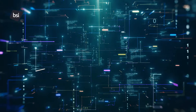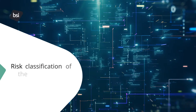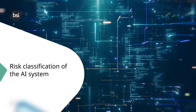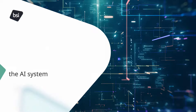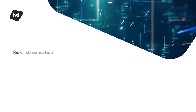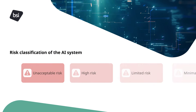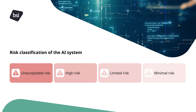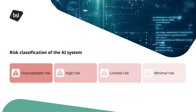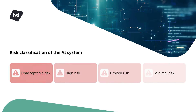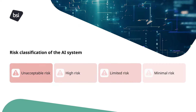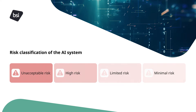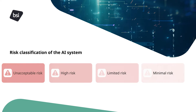The third step is to understand the risk classification system. The AI Act categorizes AI systems into several risk categories based on their potential impact on health, safety, and fundamental rights.